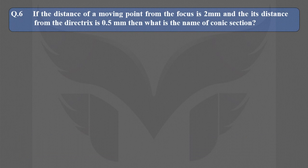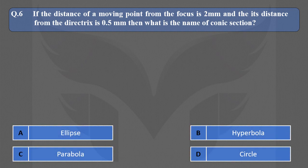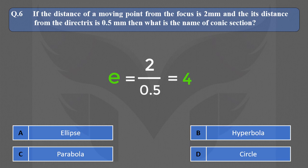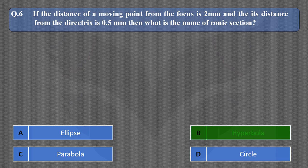Next question: If the distance of a moving point from the focus is 2mm and its distance from the directrix is 0.5mm, then what is the name of the conic section? Eccentricity is 2 upon 0.5, which is 4 — greater than 1. So the name of this conic section is hyperbola, which is option B.